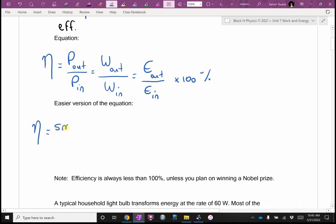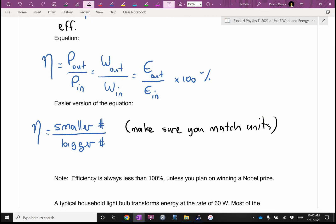So here's Mr. Dueck's easier version. Efficiency is always going to be the smaller number divided by the bigger number, but make sure you match units. In other words, make sure it's joules divided by joules, or make sure it's watts divided by watts. But don't go watts divided by joules. What I'm really saying is you can't get more than perfect on a test. You can't get more than 100% efficient. In fact, I wrote here, efficiency will always be less than 100% unless you plan on winning a Nobel Prize.